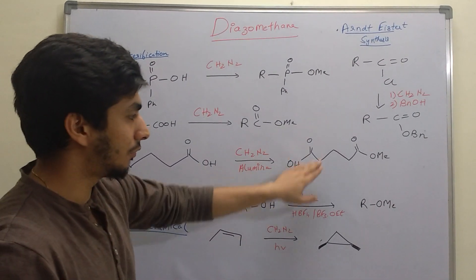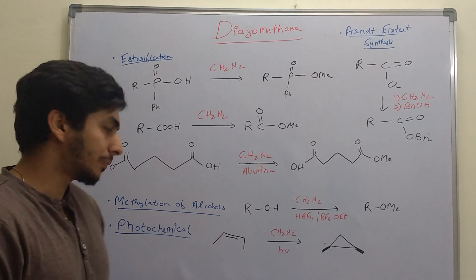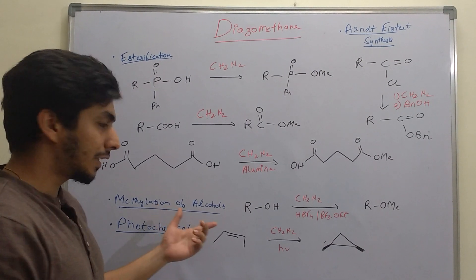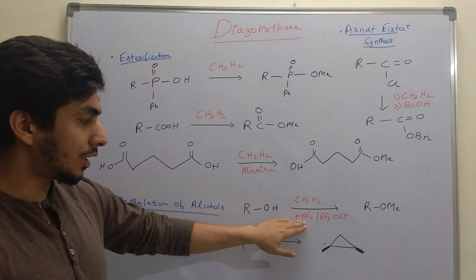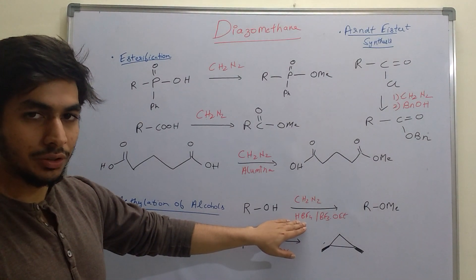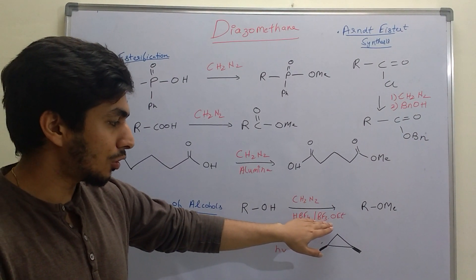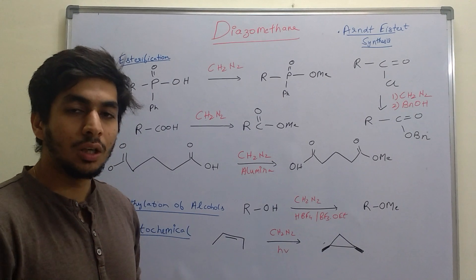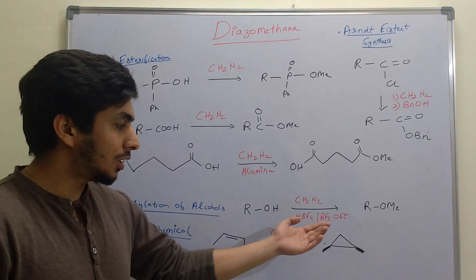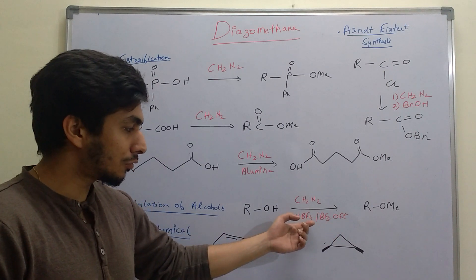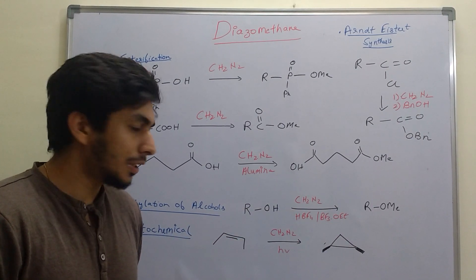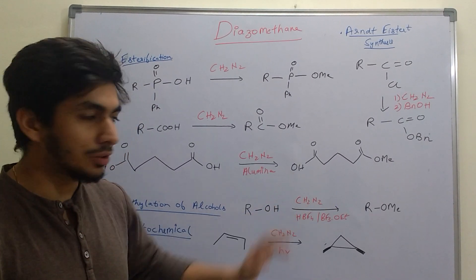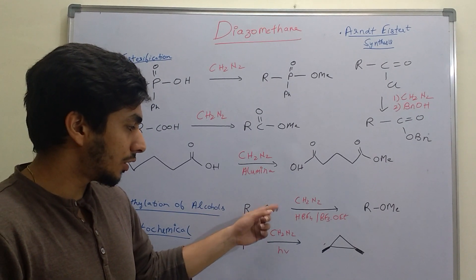Coming to methylation of alcohols, even alcohols can be methylated, but we need tetrafluoroboric acid or boron trifluoride etherate (BF3·OEt2). In the presence of either of these, we can convert alcohols to ethers. We can methylate the alcohol's OH group by replacing it with a methyl group.